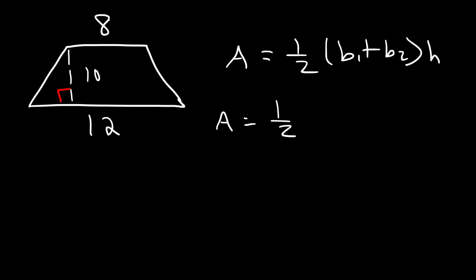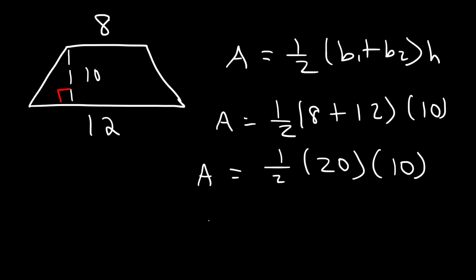So in this example, b₁ is 8, b₂ is 12, and the height is 10. 8 plus 12 is 20. Half of 20 is 10. So thus we have 10 times 10. So the area of this particular trapezoid is 100 square units. So this is the answer.